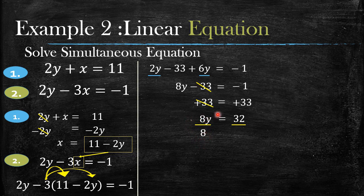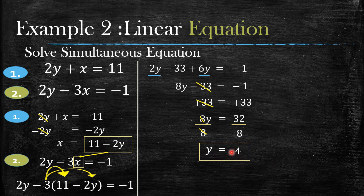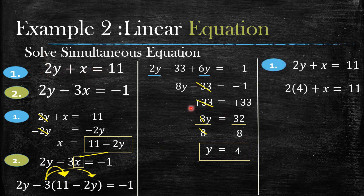We divide both sides by 8: 8 divided by 8 cancels out and we are left with y. 32 divided by 8 equals 4, and just like that we have our y value which is 4. Now that we know our y value, we can use any of the two equations to find x. Let's use the first equation: 2y plus x equals 11. Knowing that y equals 4, wherever we see y we substitute a 4.